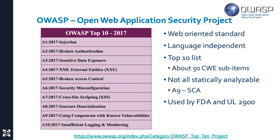This Top 10 list is not only based on things that happen, but are also dangerous. And if you look at each of these items, like injection, there's a lot of little subcategories. So there's actually about 50 items in the Top 10 list that can be traced to individual CWEs.